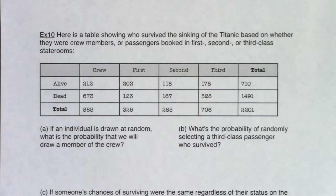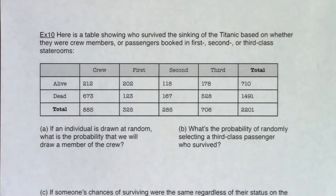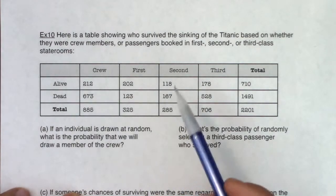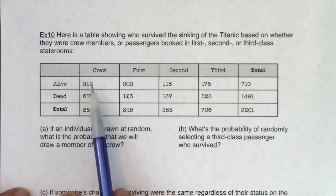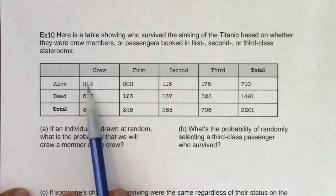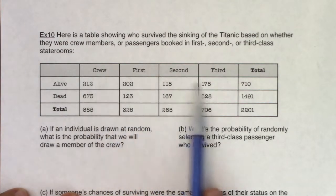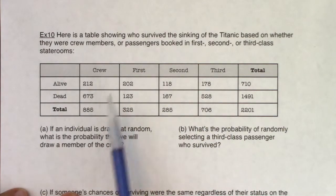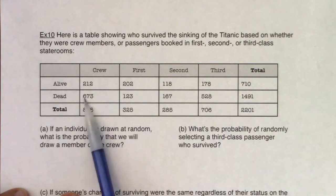Let's take a look at data from the Titanic. Here is a table showing who survived the sinking of the Titanic based on whether they were crew members or passengers booked in first, second, or third class staterooms. We've got all the folks that survived and what class status they had, or maybe they were crew members, and the folks that passed away — their class status and whether or not they were crew members.